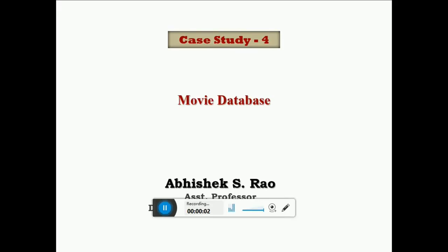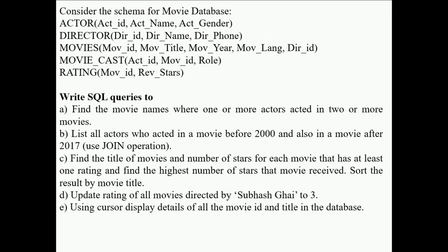Hello friends, welcome to my channel. In this lecture we are going to focus on a new database problem on movie database. Let us see the schema. This schema has five entities: actors, director, movies, movie cast, and rating. Based on this, the following queries have been given. Let us try to address them one by one.